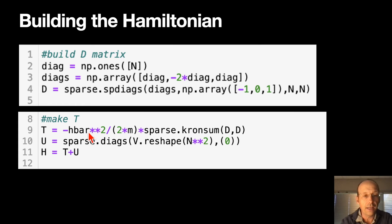Here's the total Hamiltonian. There's the kinetic energy, negative h bar squared over 2m. And this is the Kronecker sum of d and d. That's exactly what we had. And then u is just at this. V.reshape takes my v values and makes it into a single list. And then there's my h.